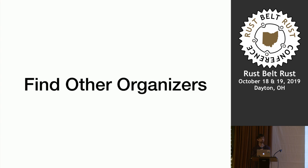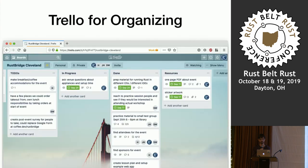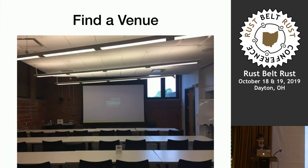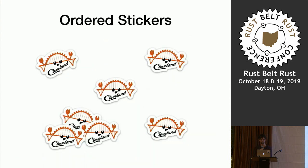So what did I do? First, I found some other organizers because I needed people to keep me accountable or else I would have just dropped off. I started using Trello for organizing tasks. We started meeting every week in the evenings remotely. Found a venue and put down some cash to lock that down. Ordered some cool stickers that look like this — I'm from the Northeast Ohio area, so I did a Cleveland Rust Bridge.